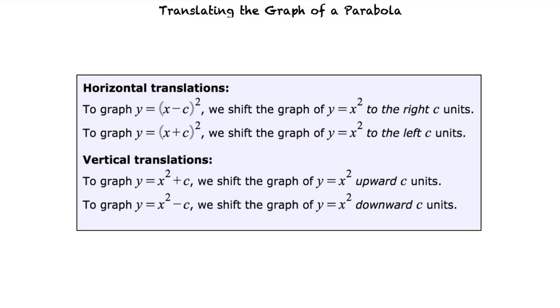When a constant is added or subtracted inside the parentheses, we'll shift the graph in the x direction, to the right or to the left. When a constant is added or subtracted from the entire function, we'll shift the graph in the y direction, upward or downward.